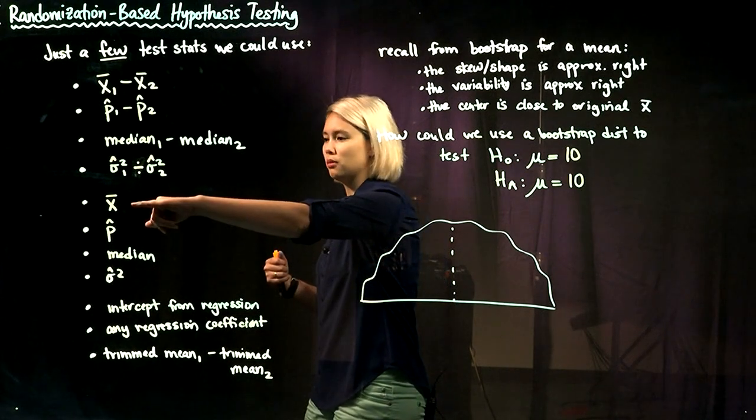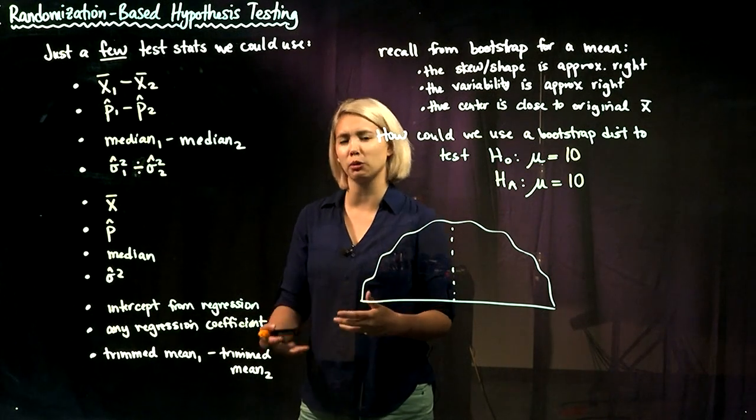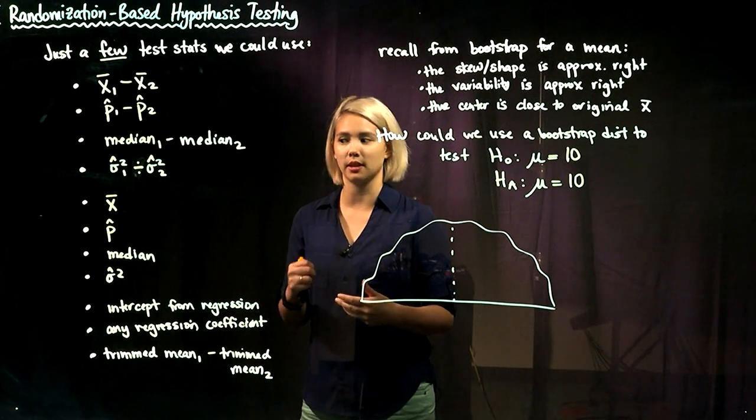But if we just have a single group, like if we're just doing a single mean, how are we supposed to do randomization-based hypothesis testing for that?